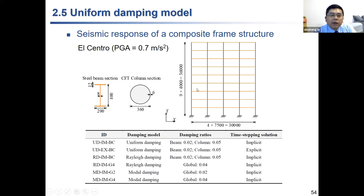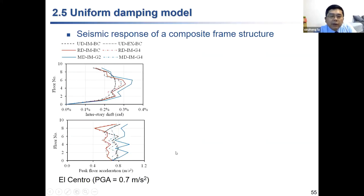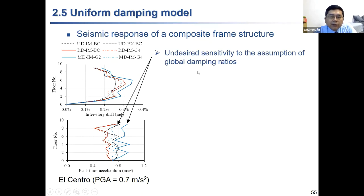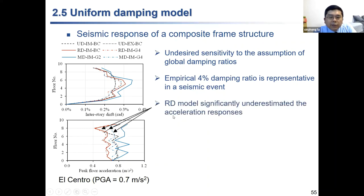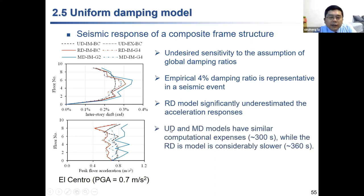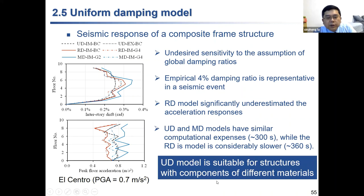For a composite frame with concrete-filled steel tube columns and steel beams, you can assign different damping ratios to different elements and combine them. The uniform damping model gives more realistic results compared to Rayleigh damping, which significantly overestimates the acceleration response. The uniform damping and modal damping have similar computation results, but Rayleigh damping is much slower. So the uniform damping model is simpler and suitable for structures with different materials.